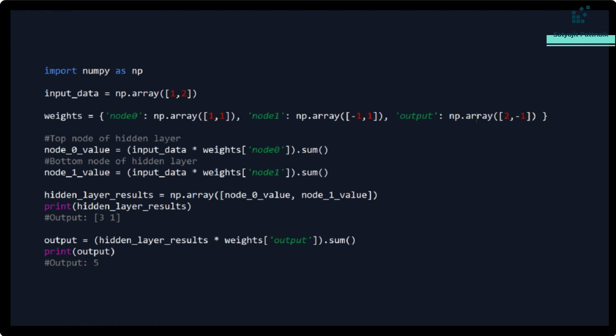Similarly, hidden layer results is done by adding value 1 and value 2, and then it is multiplied with output weights to find the final output.